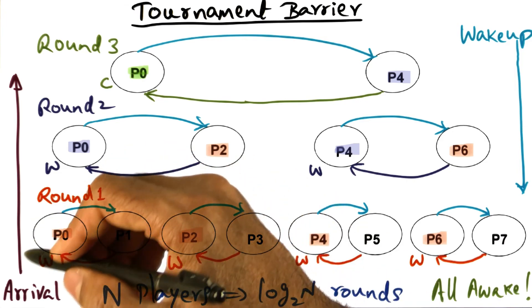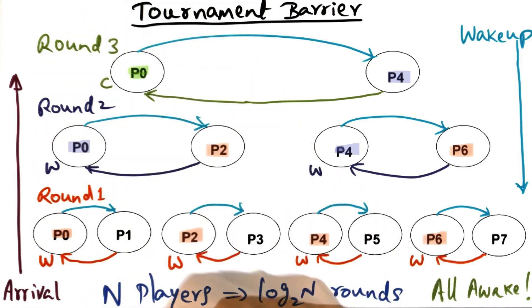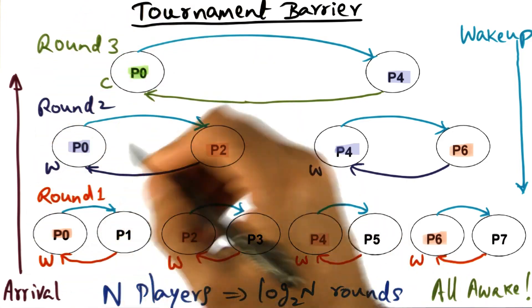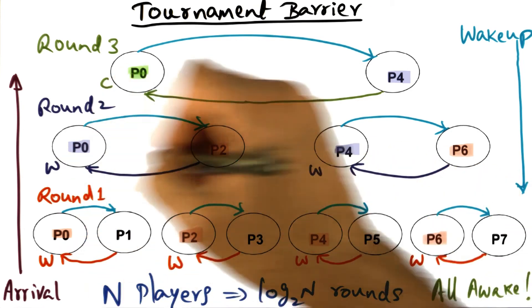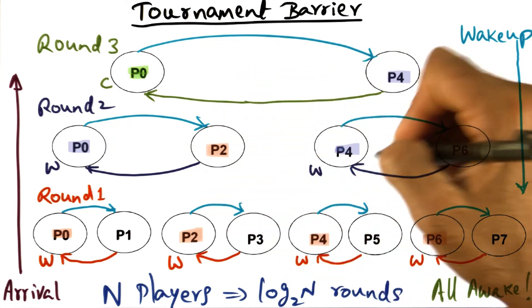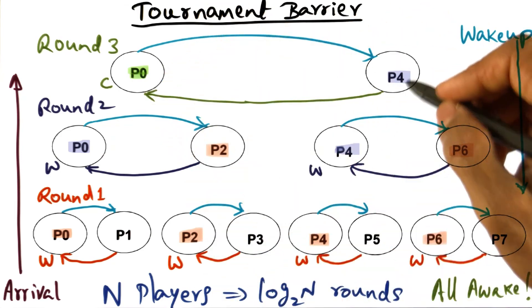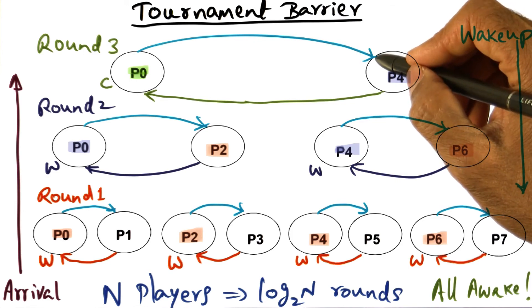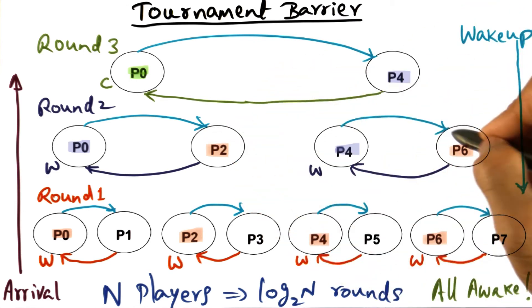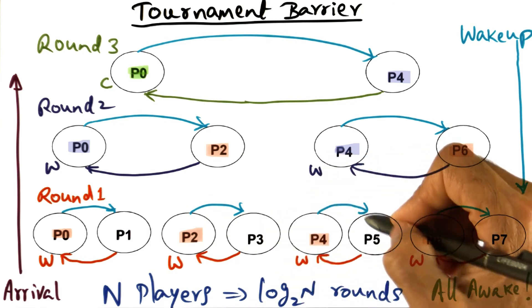So the two things that I want you to take away is the arrival moves up the tree like this with match fixing, and all the respective winners at every round waiting on a statically determined spin location. And similarly, when the wake up happens...